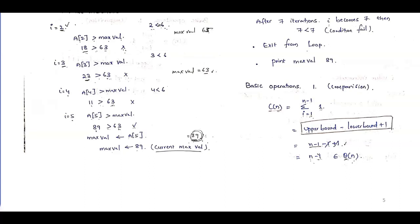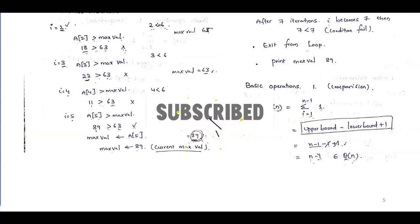Now, how do we analyze this non-recursive algorithm mathematically? The first step is to identify the size of the problem, which is n. The second step is to identify the basic operation. In each iteration, we perform a comparison and an assignment. However, the assignment does not happen every time — only the comparison occurs in every iteration. So we consider only the comparison as the basic operation — there is only one basic operation.